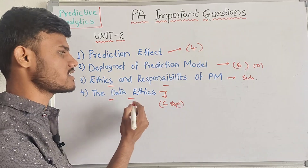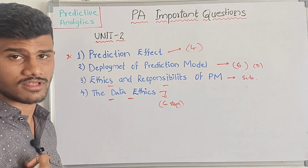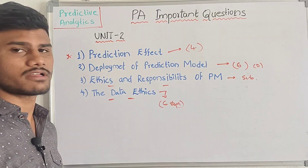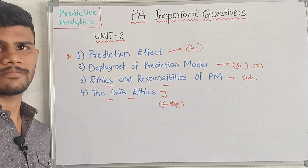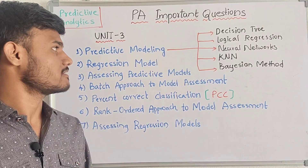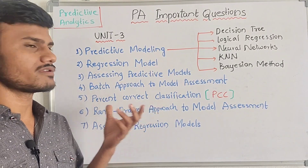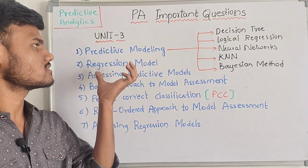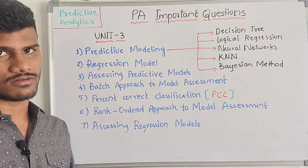This is completely the second unit — it is a very easy unit. Coming to our third unit. This third unit is completely about Predictive Modeling and Regression Models — these are two parts.